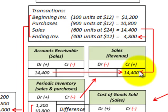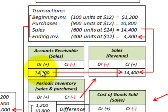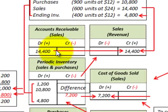To record our sales, we would credit our sales revenue account on the income statement for $14,400, and then on our balance sheet, we would debit accounts receivable for $14,400, assuming they were all sold on account.